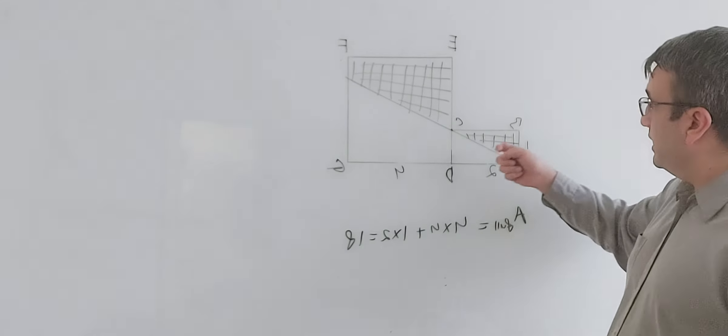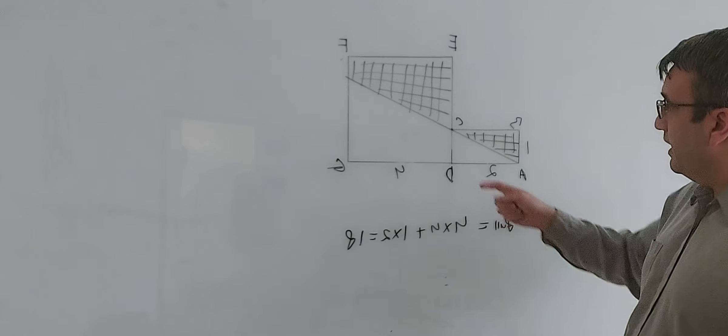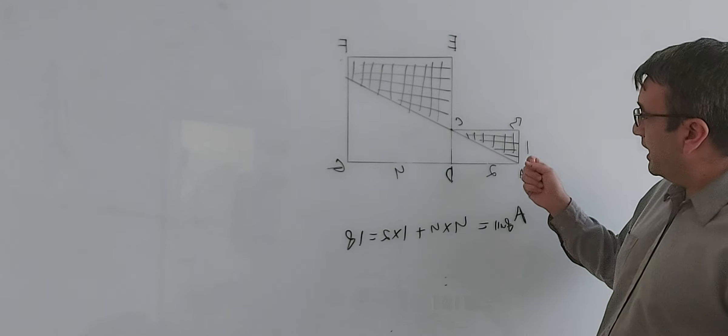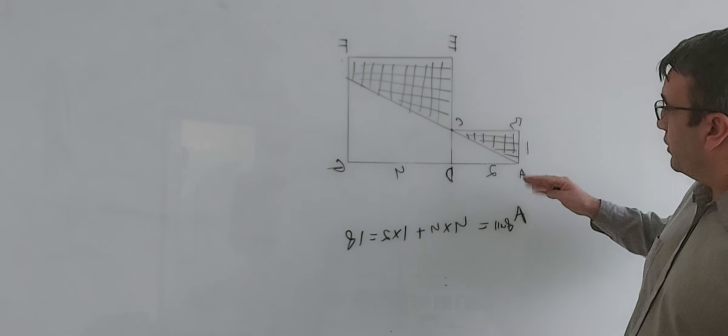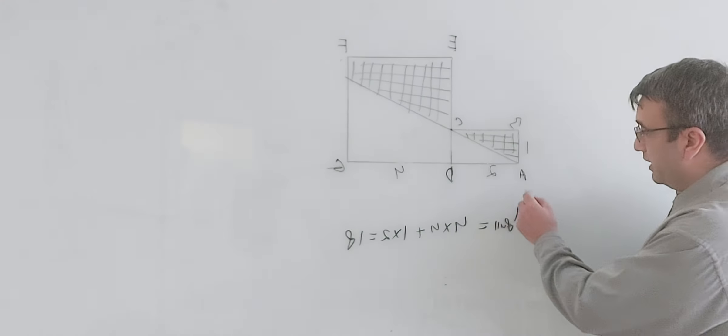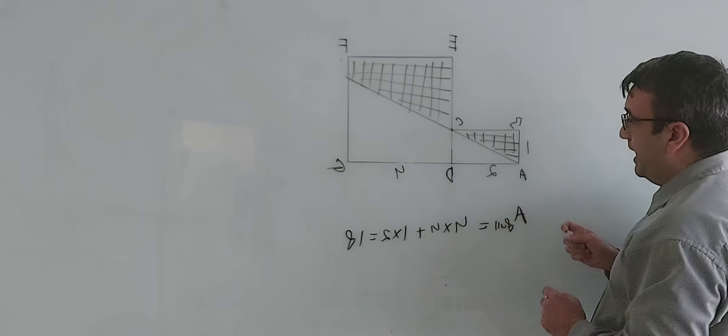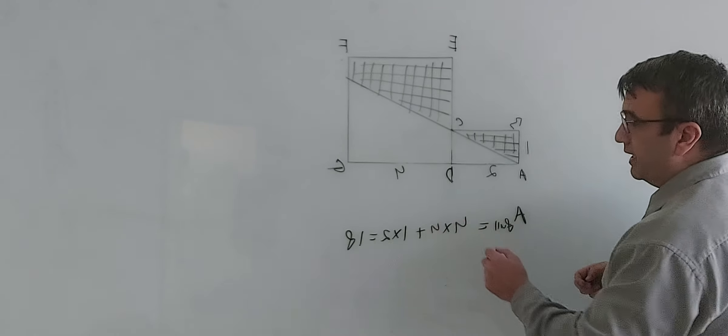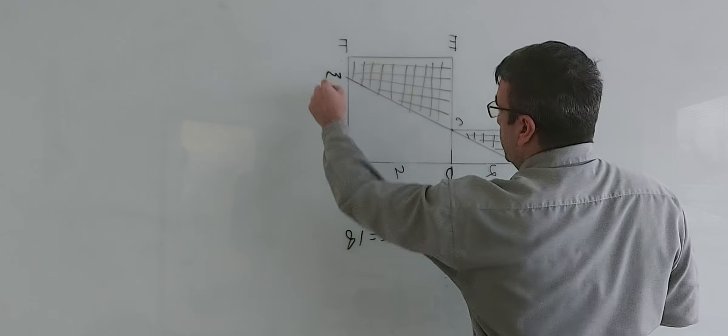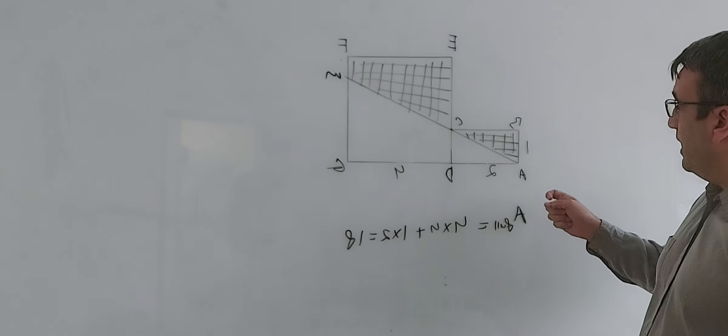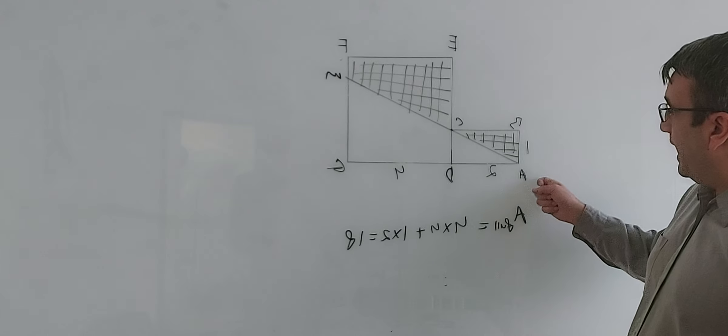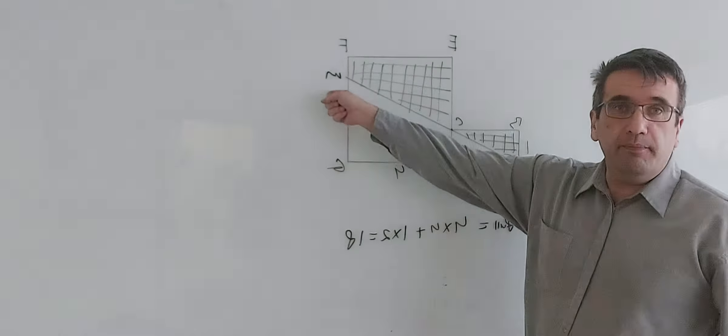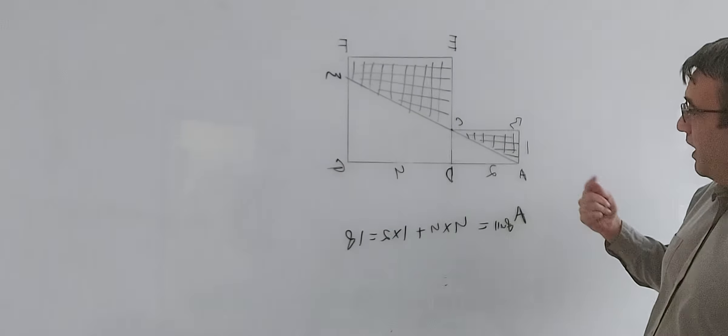So now how to find area of the white region. If we take a look, we have two triangles here. We have triangle ADC and we have triangle, let's mark it M here, letter M. And we have triangle AGM. So we have two triangles here.